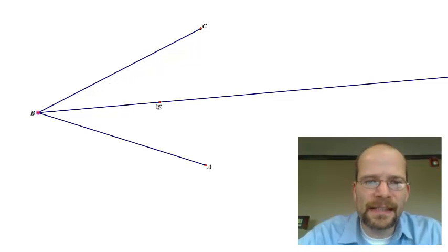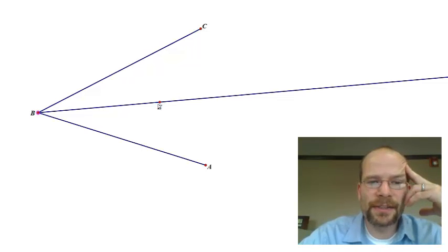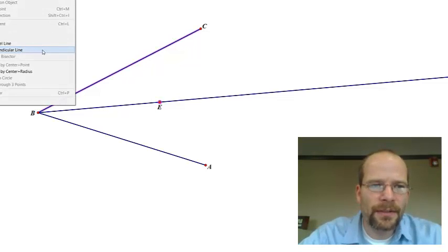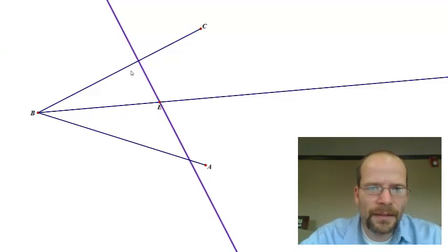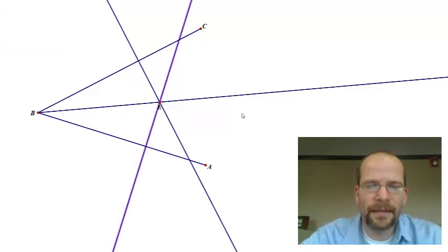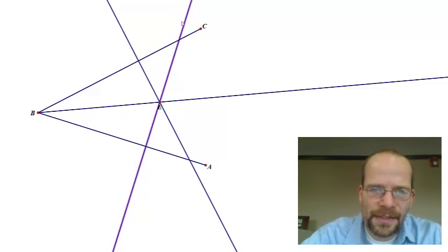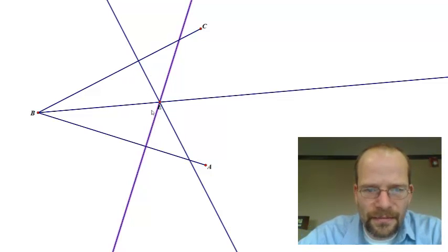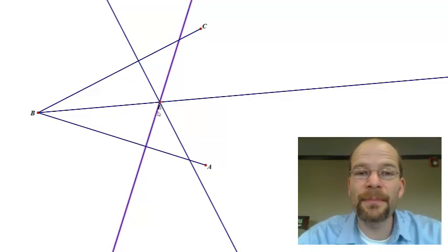To measure that distance from a point to a line, we always go along the perpendicular segment. I'll construct the perpendicular line from point E to segment BC, and likewise from point E to segment BA. There's a lot going on, but all we're interested in is this segment right here and this segment right here. One of the things you may notice is that they look to be fairly congruent — and that's the theorem we're presenting.